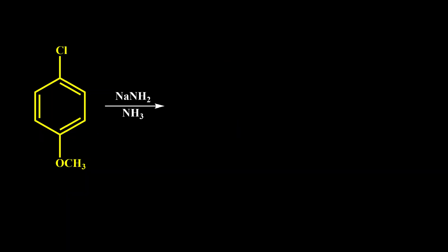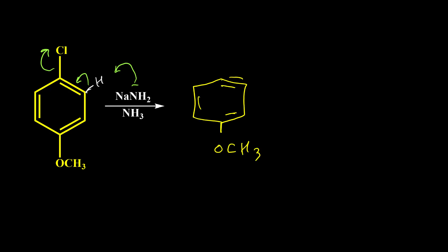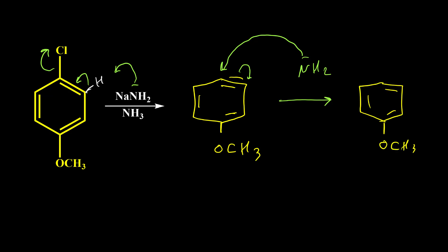Here is the first example. Because we don't have an electron-withdrawing group and we don't have a benzene group in the ortho or para position of the leaving group, the reaction should go through the benzyne mechanism. We have a hydrogen here, so NH2⁻ performs an acid-base reaction and we have formation of benzyne. This benzyne intermediate is not symmetrical because of the existence of the methoxy group. NH2⁻ or ammonia can attack to this carbon and push the electron to the next one, giving us this product.